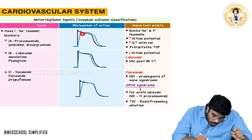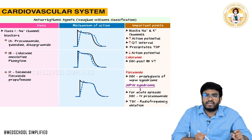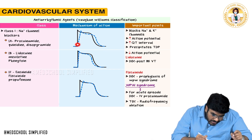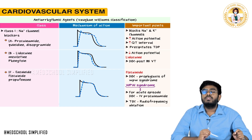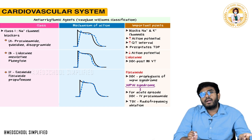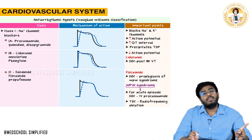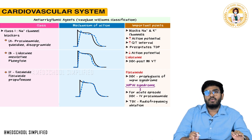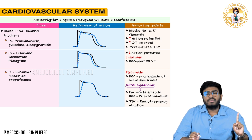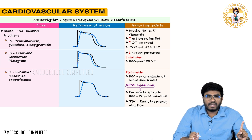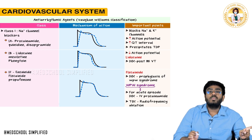Because class 1A drugs block both sodium and potassium channels, both depolarization and repolarization are affected. Depolarization is slowed and repolarization also takes a lot of time. So both phases are affected, and automatically the heart rate decreases. Class 1A anti-arrhythmic drugs are both sodium channel blockers and potassium channel blockers.